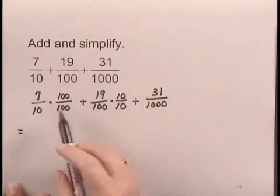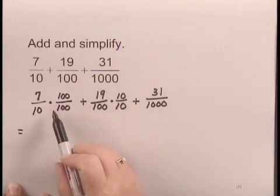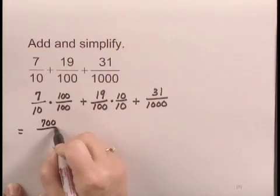When we multiply fractions, we multiply numerators and multiply denominators. So 7 tenths times 100 over 100 is 700 over 1,000.